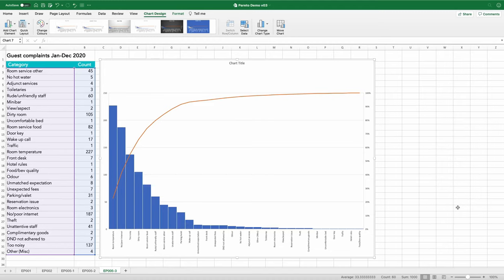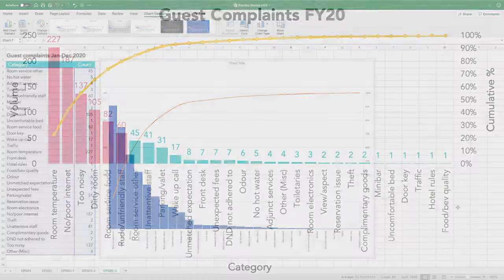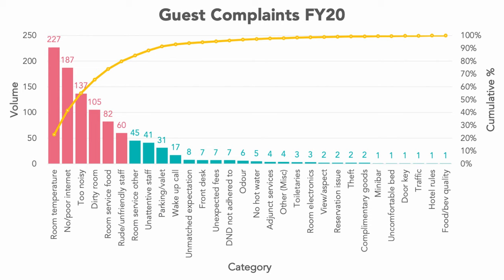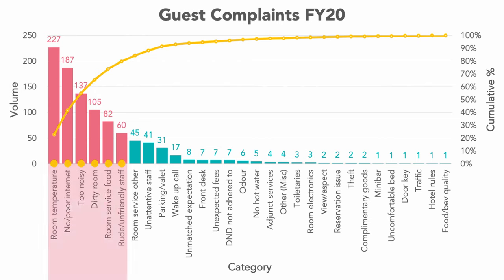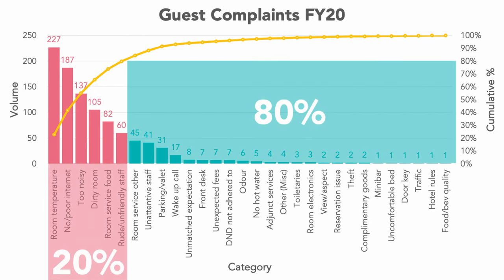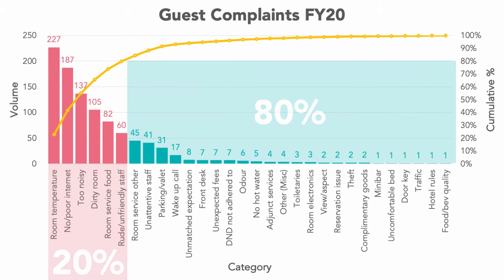Assuming you've created your Pareto chart, let's look at how to read it. Remembering that we had 30 categories of complaints, we know that the top 6 issues are causing 80% of the damage — so you can see that 80-20 relationship at work. Of course, I designed it to work out that way for this demonstration, but it could just as well be 70-30, 90-10, or something else.